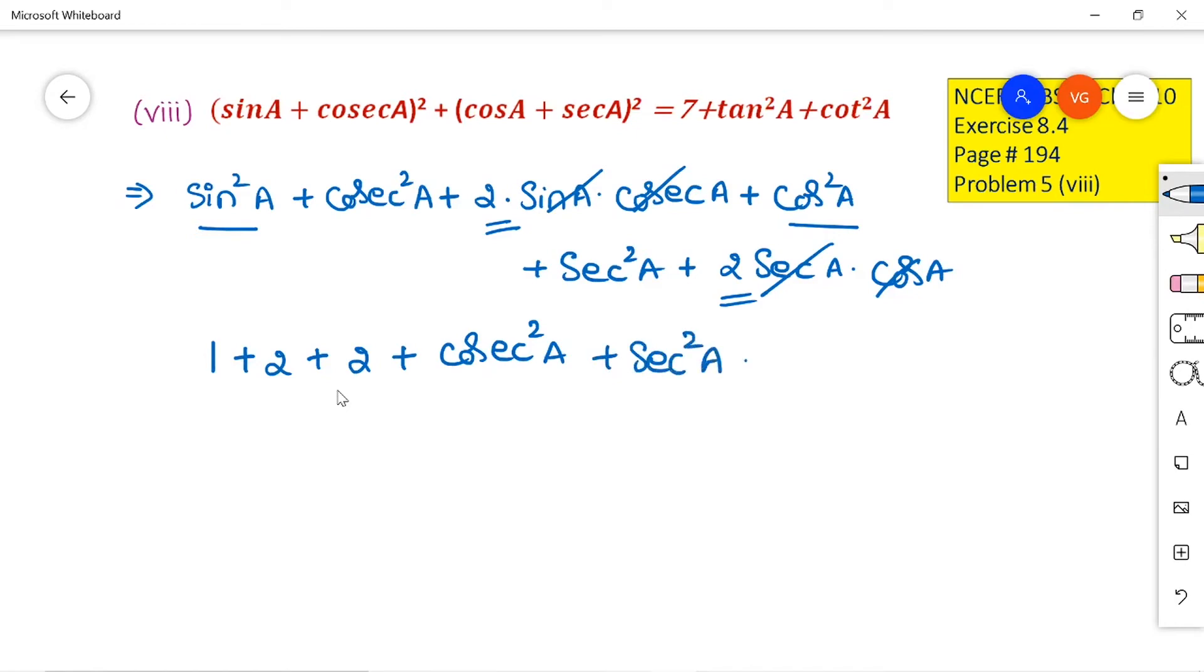So, the answer here is 7 plus tan²A plus cot²A but here we are getting 5 plus cosec²A plus sec²A. That you can write this cosec²A and sec²A in terms of the tan and cot, the identities we can use here.